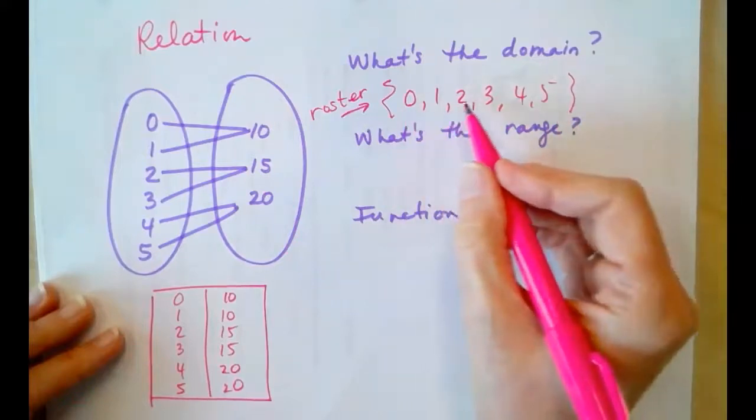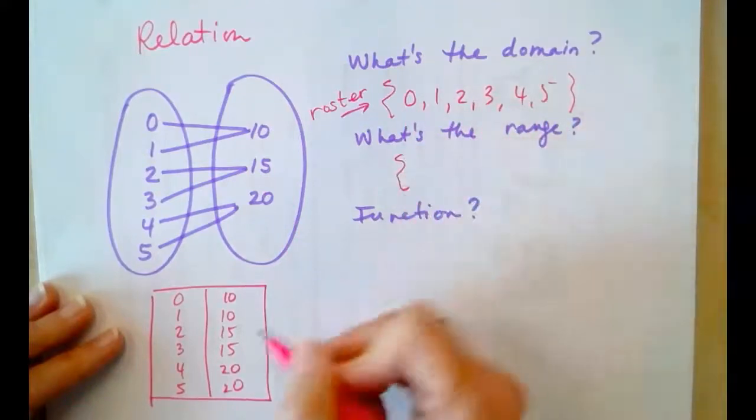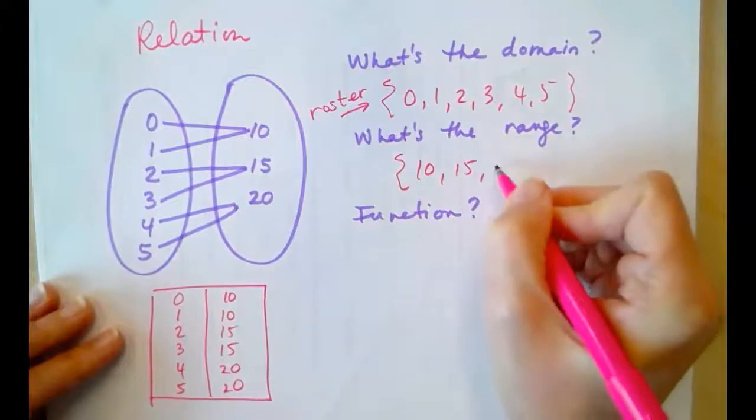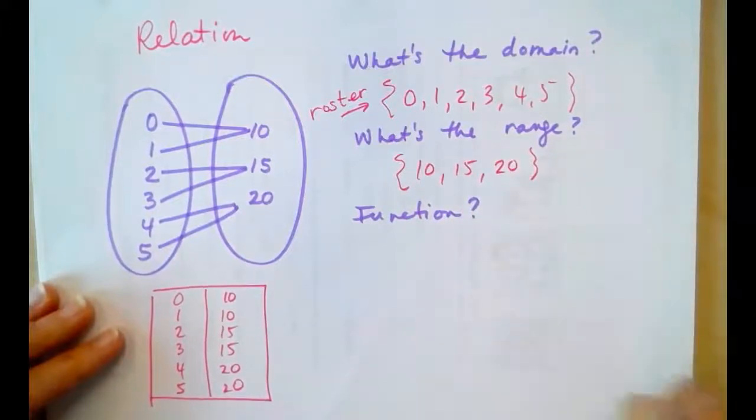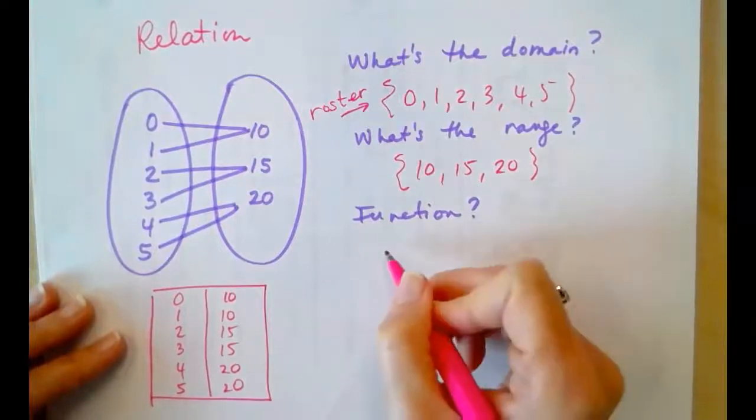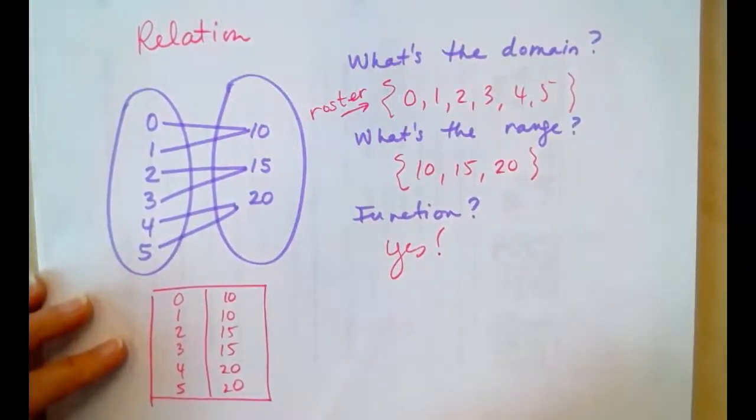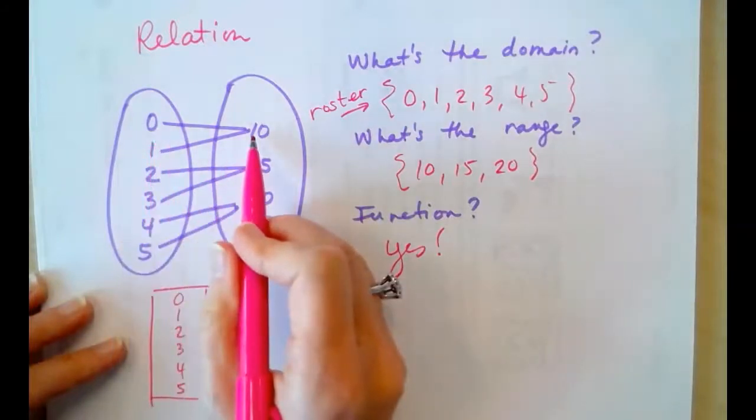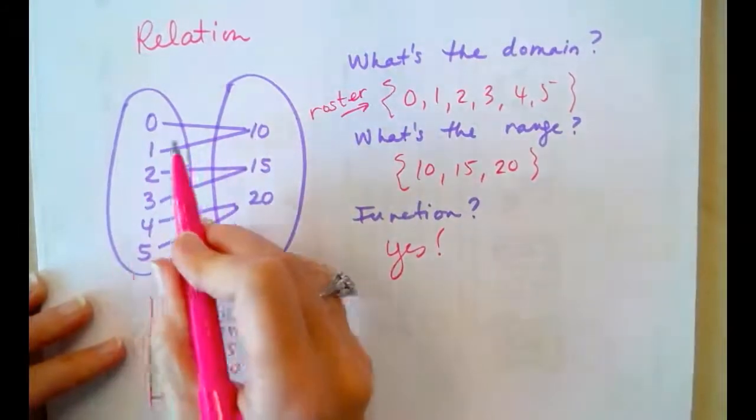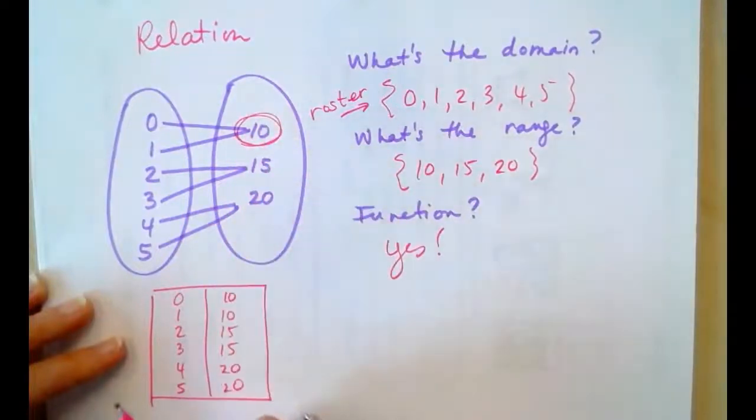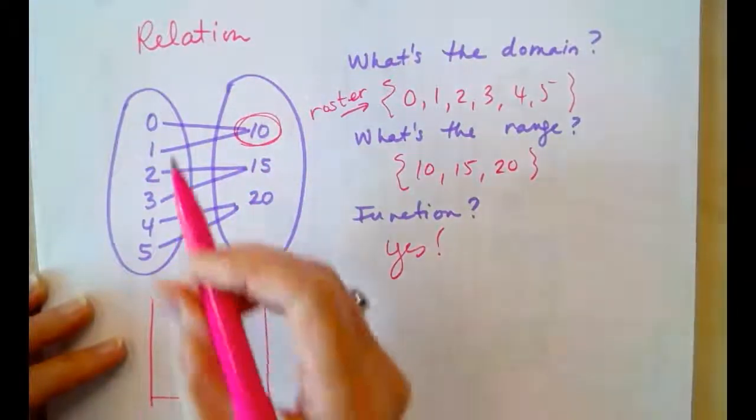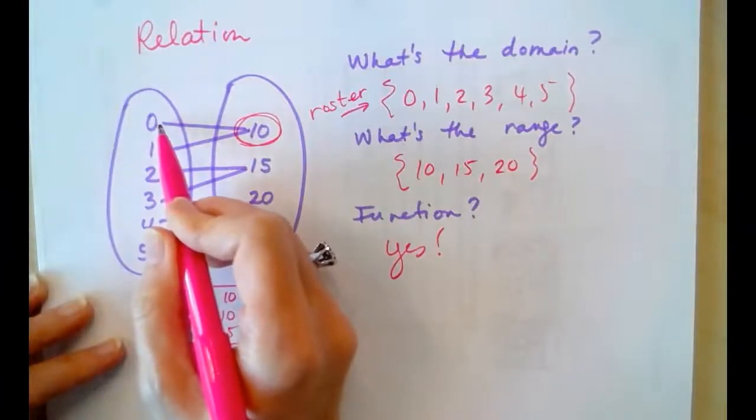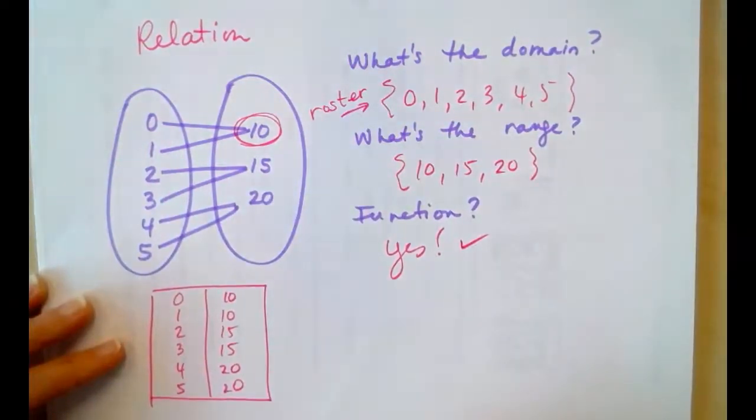So, the domain: 0, 1, 2, 3, 4, 5. The range: 10, 15, and 20, also in roster notation. Is it a function? Yes, it is a function. Recall the definition of a function. Each input maps to exactly one output. Now, 0 maps to 10 and 1 maps to 10. It's okay that they share the same output. But, does 0 map to any other member of the range? No. That's what makes it a function.